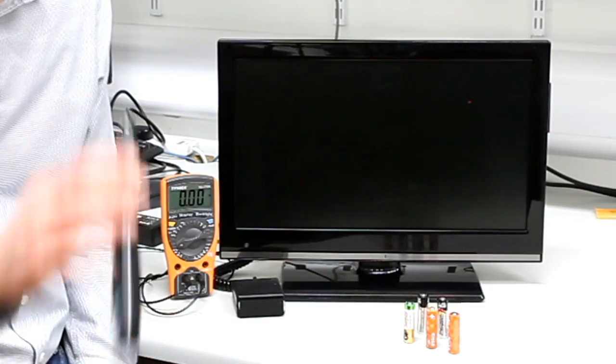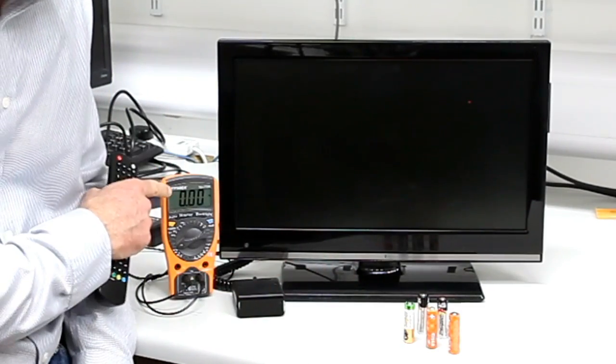The current that you can see here is the current flowing out of the adapter and into the TV. You can see it is practically zero.